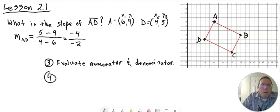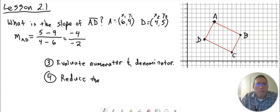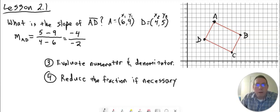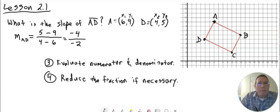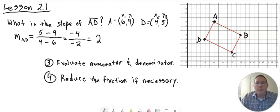Step 4, the last step, is to reduce. Do not use a calculator — we don't want a decimal value. Reduce the fraction if necessary. Sometimes after step 3 the fraction can't be reduced, so that means it's your final answer. In this case it is necessary. Reducing can mean canceling negatives — a negative divided by a negative is a positive. So negative 4 divided by negative 2 is positive 2. Therefore, the slope of AD is M equals 2.